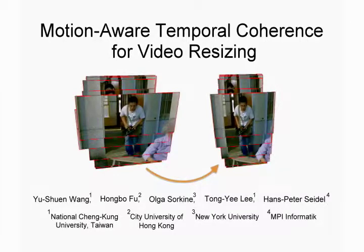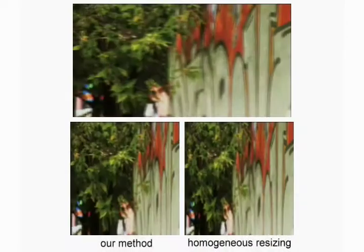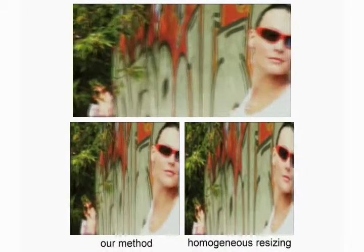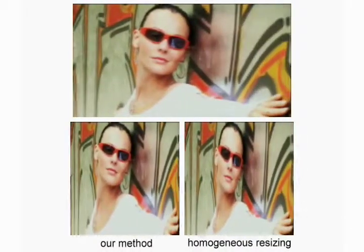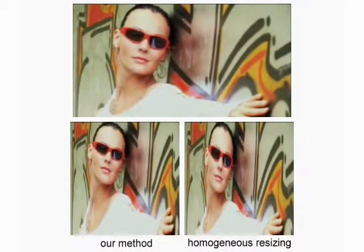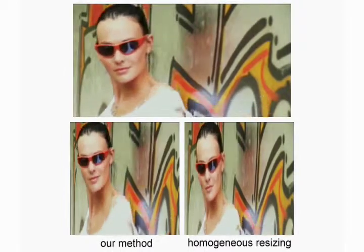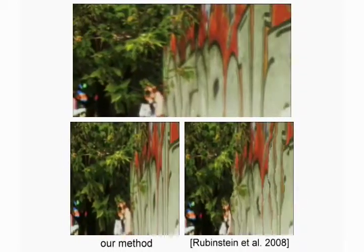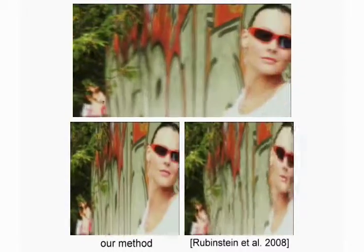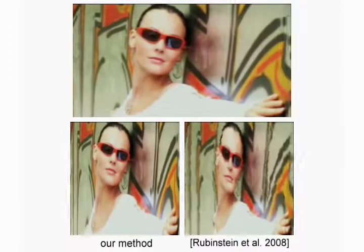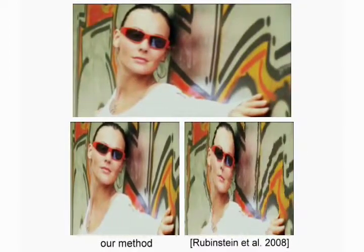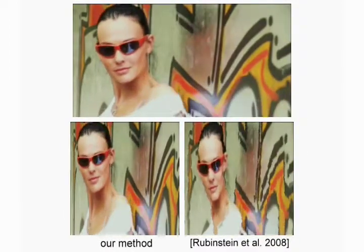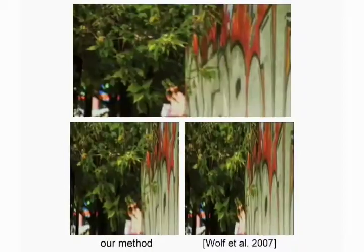This work addresses the problem of temporal coherence for content-aware video resizing. Our new resizing framework faithfully preserves visually important content in a temporally coherent manner. Temporal coherence in video retargeting becomes challenging when the input videos involve camera and object motion. Previous solutions completely ignore such motion influence, easily causing flickering or waving artifacts.